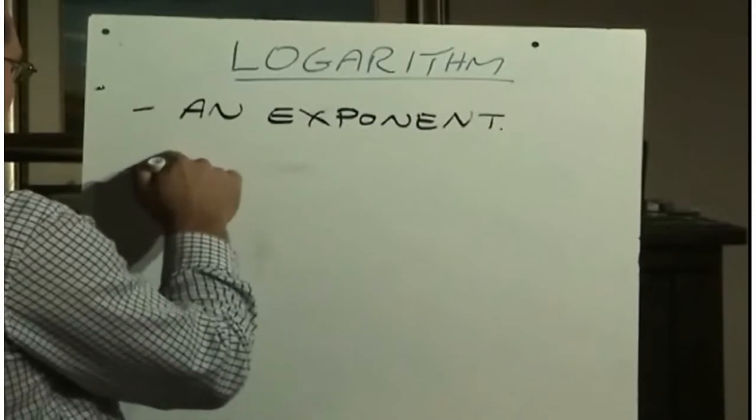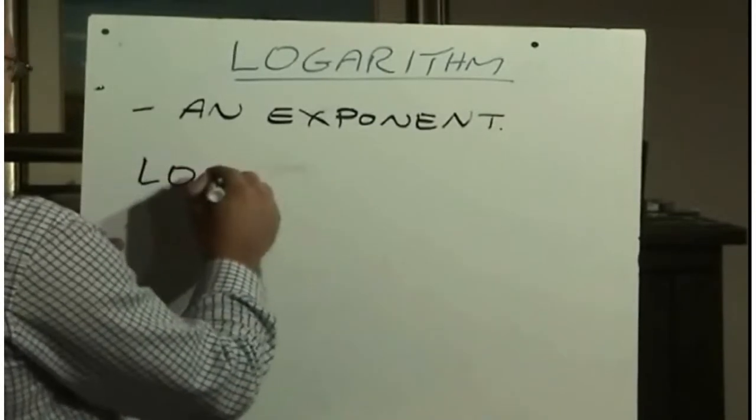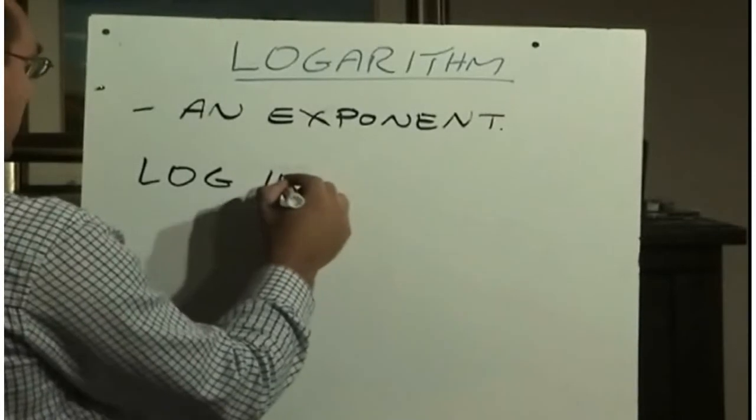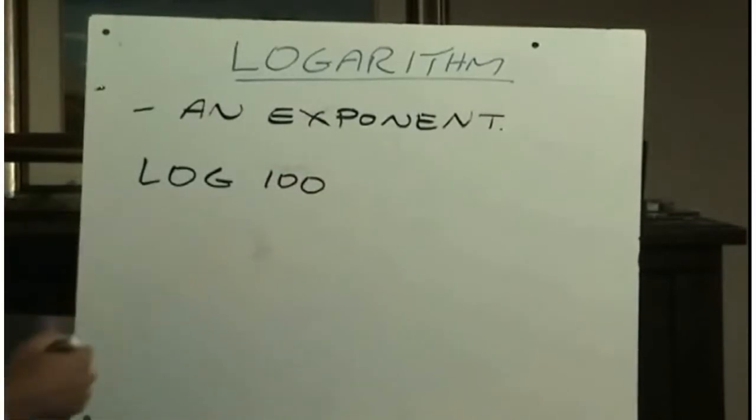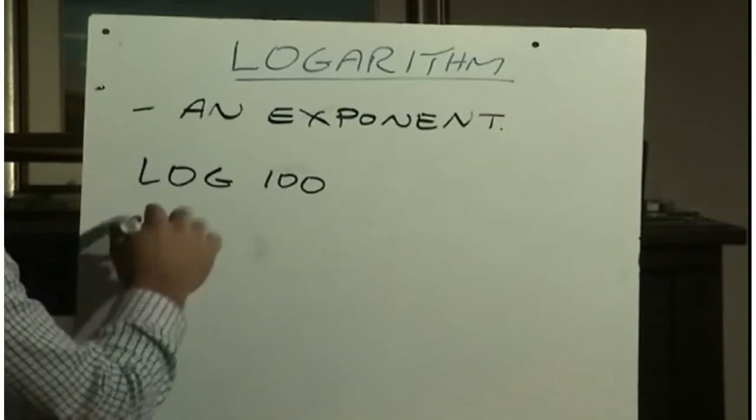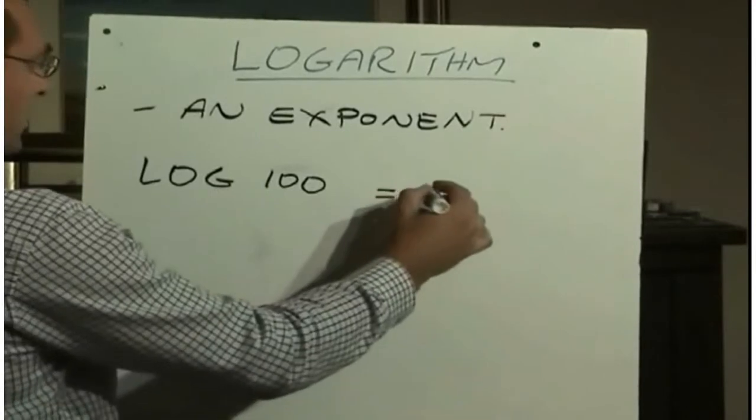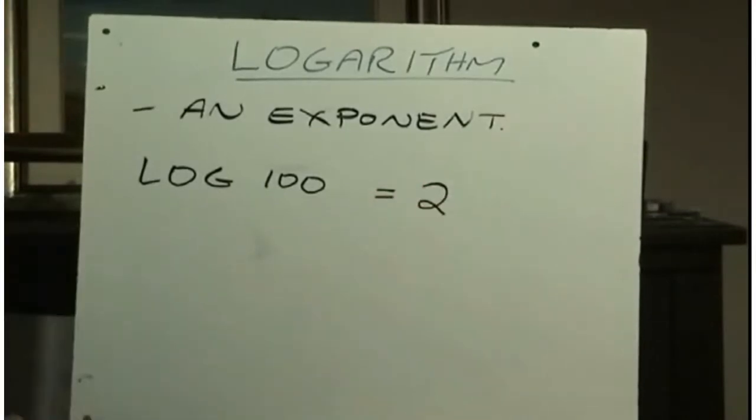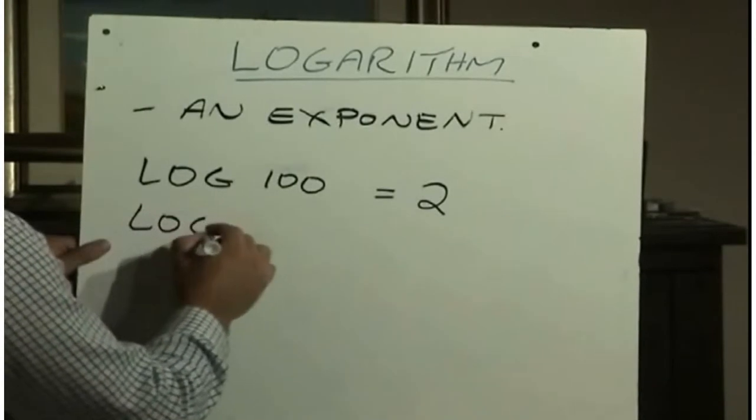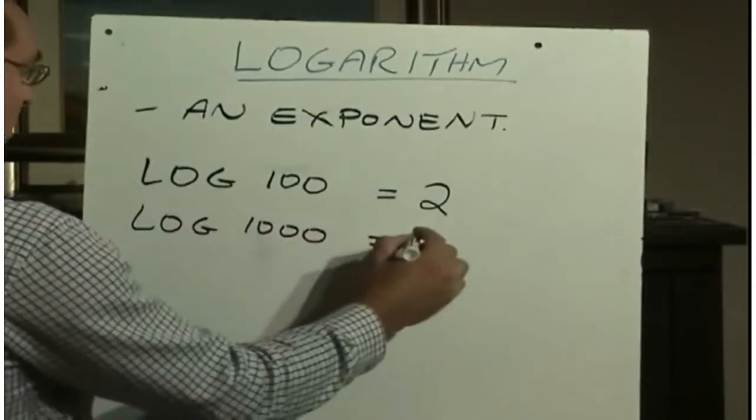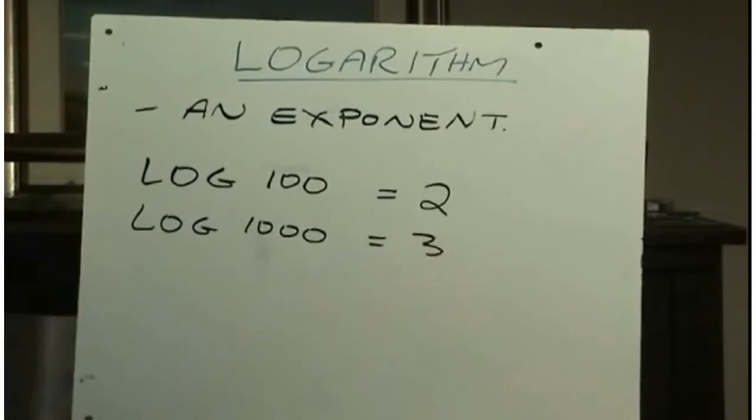Let me show you a couple of examples here. On your calculator, you're going to see that there's a button, log. You should find it on there. And then if you enter in on your calculator, log of 100, you should see that that answer is 2. And if you entered log 1000, you should see that the answer is 3.